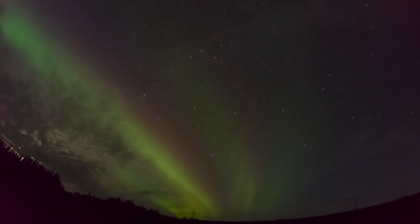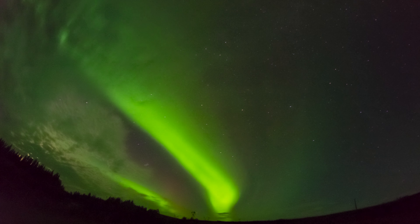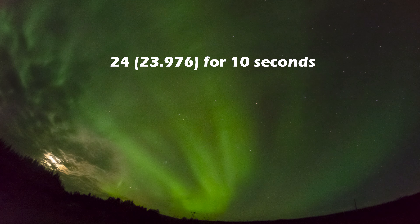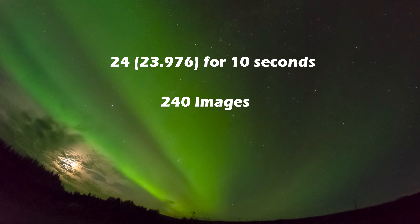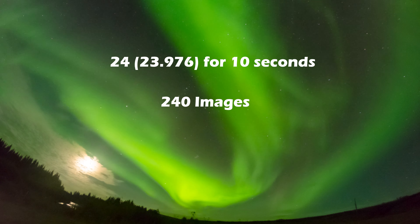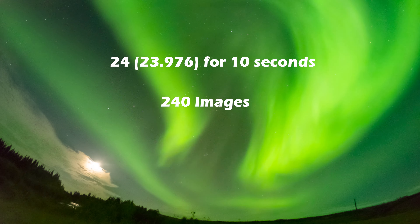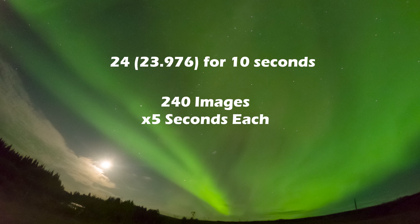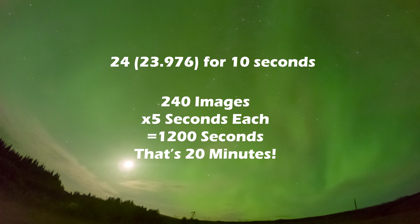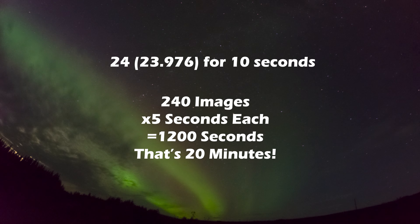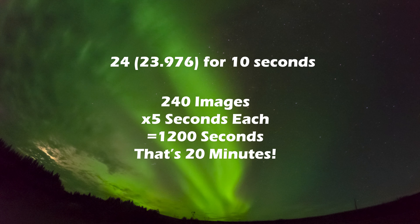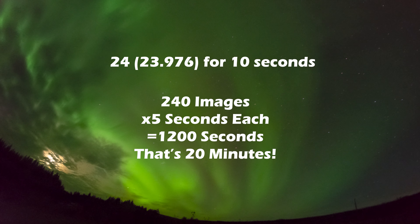When capturing northern lights, your shutter duration might be as low as 2 seconds or as high as 20, depending on what the lights are doing, how bright they are, and of course, what gear you're using to capture them. So for a 10 second long, 240 image time lapse at 24 frames per second, that's 240 separate images. 240 images times your shutter duration is the total acquisition time. With 5 second exposures times 240, it will take 1200 seconds — that's 20 minutes. That's the acquisition time, or how long it takes to make the entire image sequence.